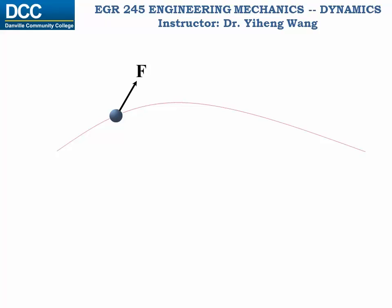For a more general situation, the force could be a function of time, and the particle could be undergoing curvilinear motion with direction not necessarily along the direction of the force. For example, let's say after a short period of time dt, the particle has moved to this position. The change in position is position vector dr, and the length of the path is ds. If the time period is sufficiently small, ds can be considered equal to the length of the position vector dr.